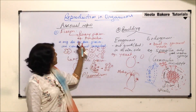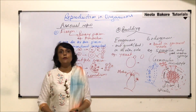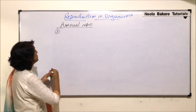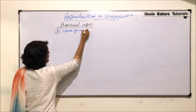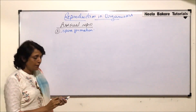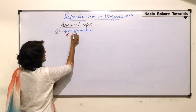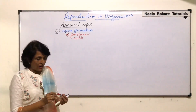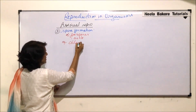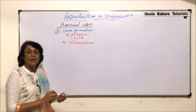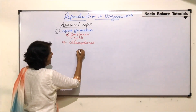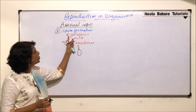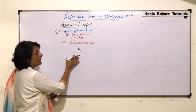The next type of asexual reproduction is spore formation. Spores are of various types; two important ones are zoospores and conidia. Zoospores are motile and normally have flagella for movement. In chlamydomonas, the spores are biflagellate and able to freely swim in water, so they are called zoospores.